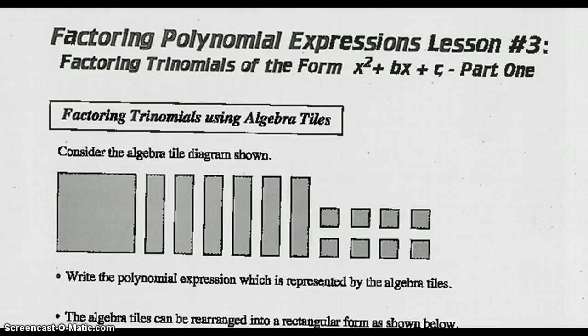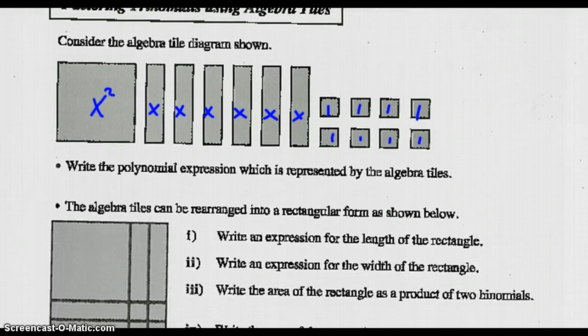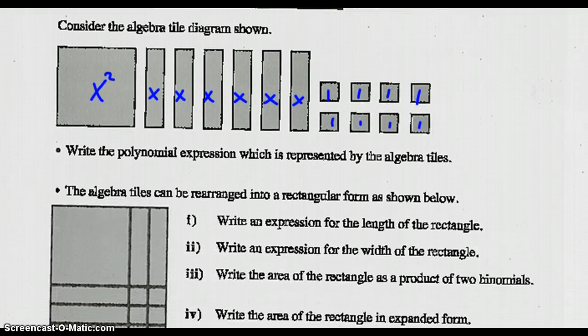The first thing we're going to look at is algebra tiles. The first thing it asks us to do here is write the polynomial expression which is represented by these algebra tiles. So this is an x squared, these are all x's, and these are all 1's. The polynomial expression represented by this set of algebra tiles is x squared plus 6x plus 8.